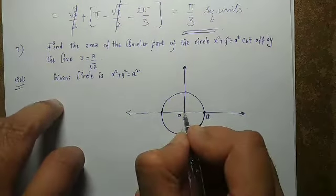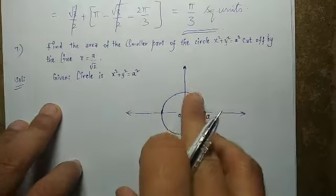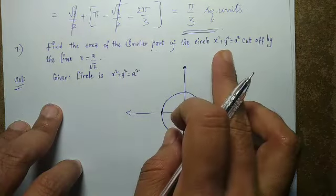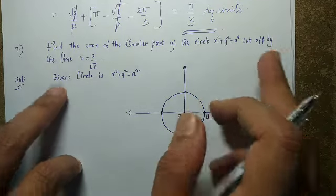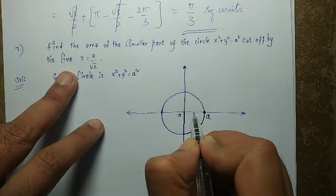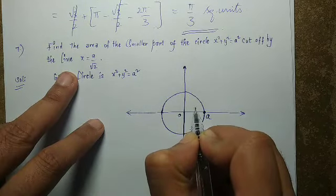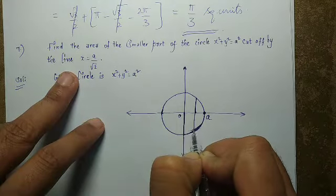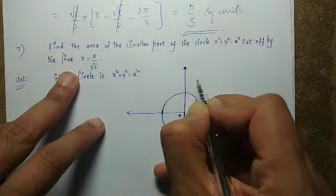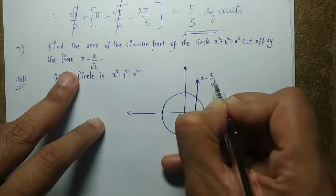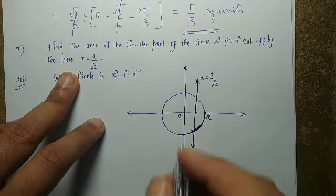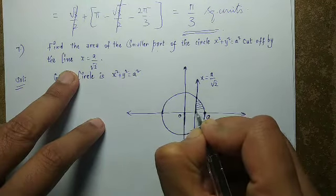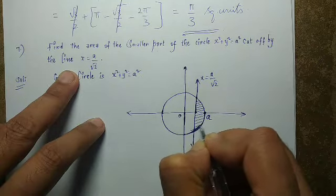The circle x² + y² = a² has center at the origin and radius a units. The line x = a/√2 cuts the circle, and the shaded region — the smaller part — is what we need to find.